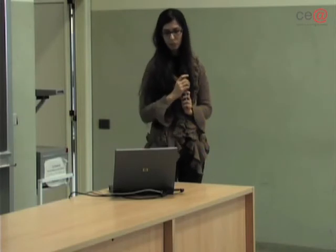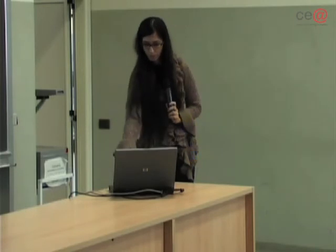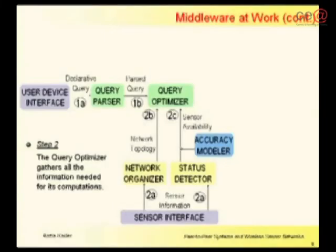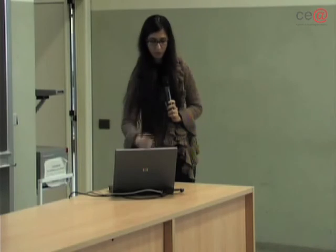Here is a small animation about the step-by-step working of the proposed middleware. As step one, the query is issued by the user device interface, parsed by the query parser, and sent to the query optimizer. In step two, the query optimizer gathers all the information from the network organizer and the state detector for its computations.